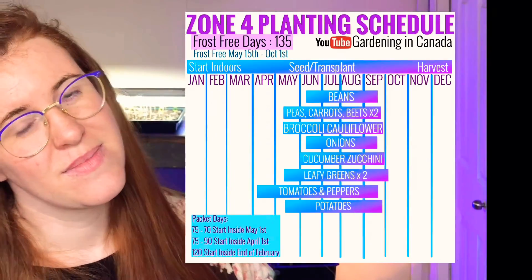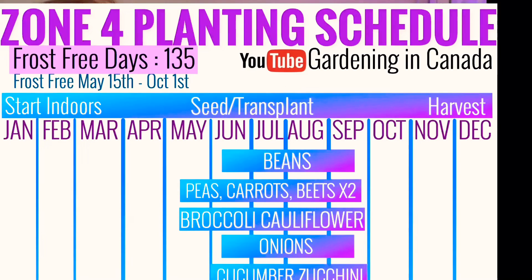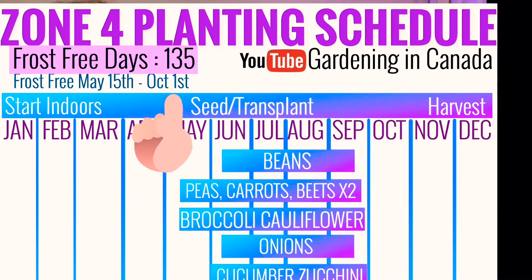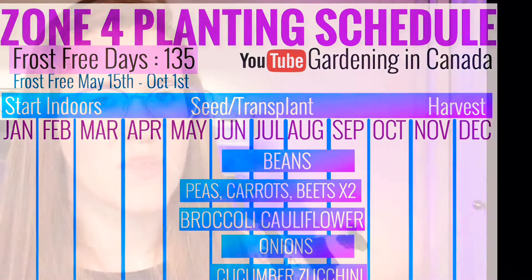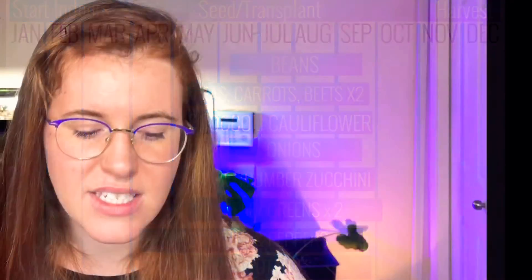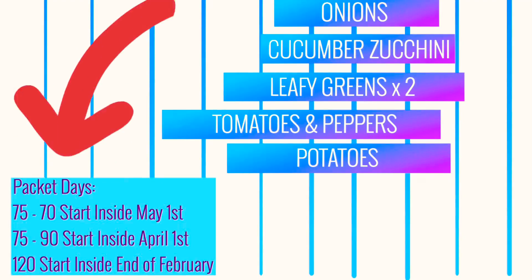Zone four, your planting schedule is going to look like this. You also have your total number of days you can grow, your start date and your finish date, as well as all the different crops — when to start inside, transplant outdoors and harvest — and then your key at the bottom on how to read the actual plant tags. Zone four looks very similar to zone three, and there's a reason for that: zone four is a milder version of zone three.